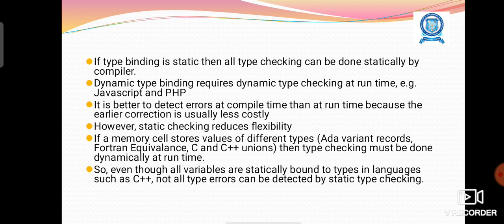If type binding is static then all type checking can be done statically by the compiler. Dynamic type binding requires dynamic type checking at run time, for example in JavaScript and PHP.